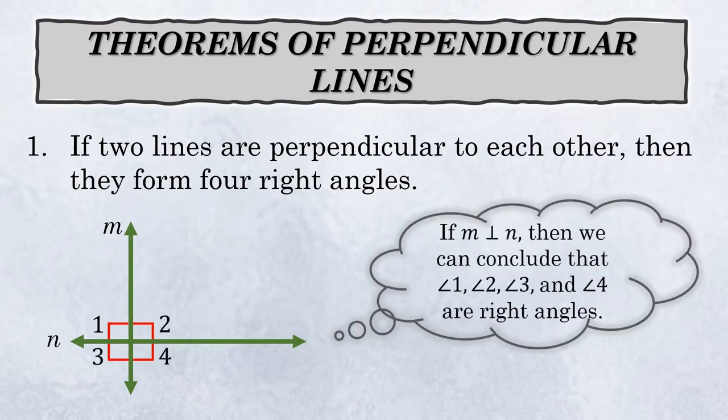So if line M is perpendicular to line N, then we can conclude that angle one, angle two, angle three, and angle four are all right angles.